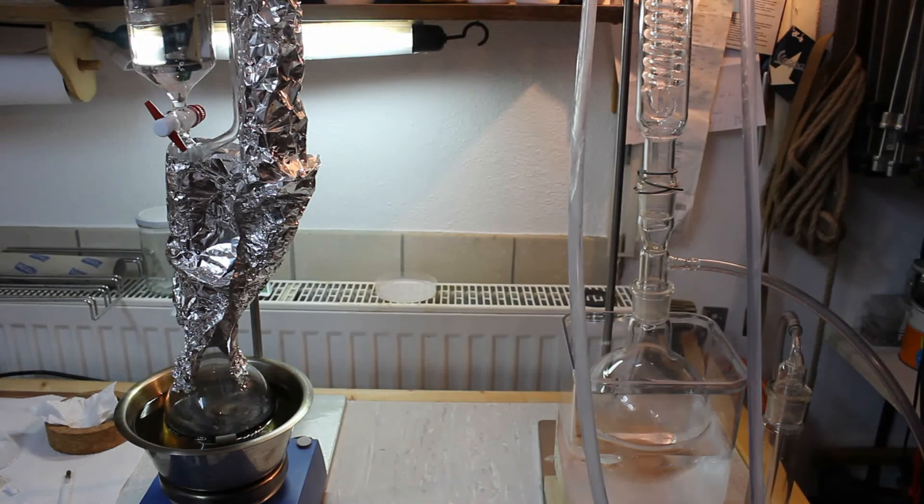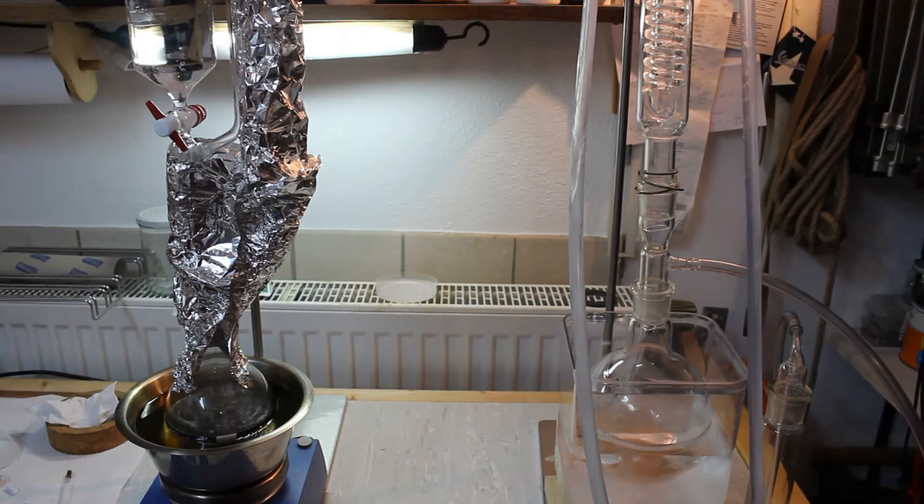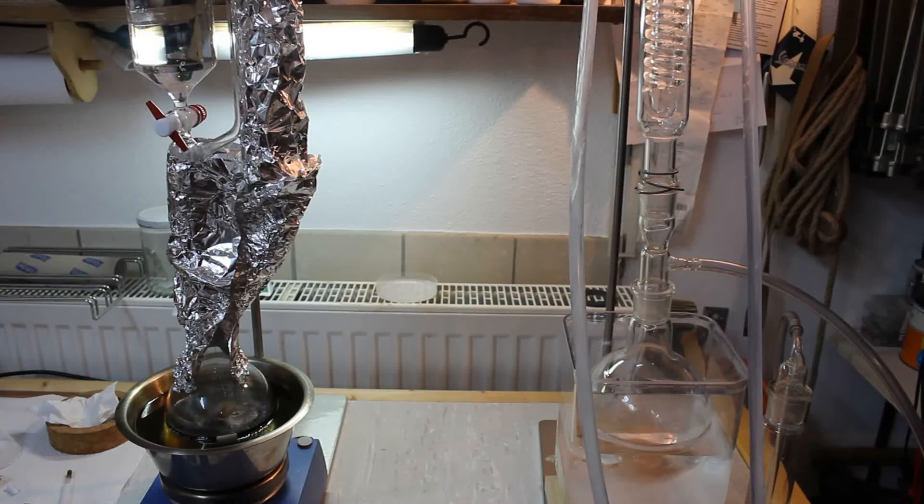We are collecting diethyl ether at a pretty constant drip rate now and I've opened the addition funnel to adjust the same drip rate of ethanol into the reaction flask as we are collecting ether. I started out with 300 milliliters of ethanol in the addition funnel and I think this should be enough.